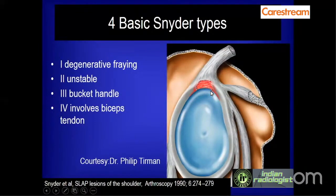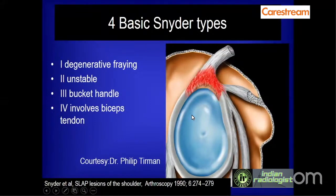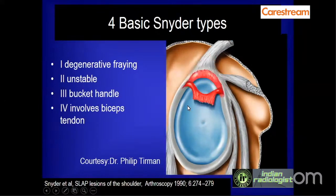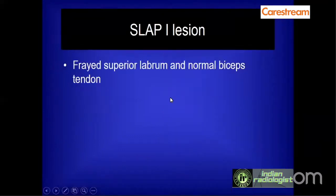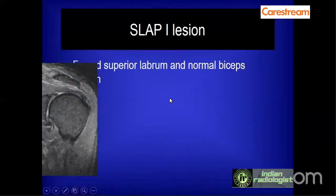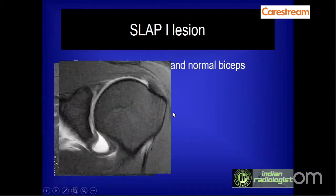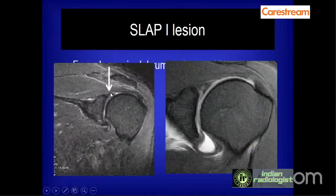In Type 1, there is degenerative fraying of the labrum. In Type 2, the tear extends into the labrum making it unstable. Type 3 is the bucket handle type with the torn labrum separated, and Type 4 extends to involve the biceps tendon. SLAP 1 lesion shows globular hyperintensity in the superior labrum seen in coronal images.